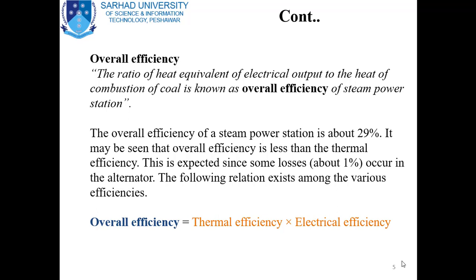The overall efficiency of the system can be defined as the ratio of output to input — specifically, as the ratio of the heat equivalent of electrical output to the heat of combustion of coal. The overall efficiency of a steam power plant is about 29%. The overall efficiency is less than the thermal efficiency because some losses of about 1% occur in the alternator.